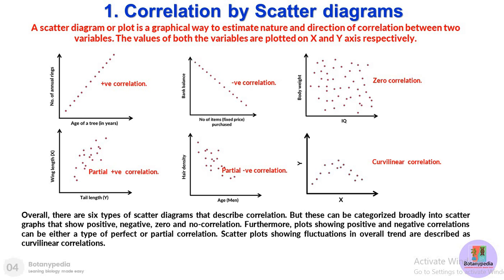Overall there are six types of scatter diagrams that describe correlation. If we broadly categorize these, we can have positive correlation, negative correlation, zero correlation, and curvilinear correlation.